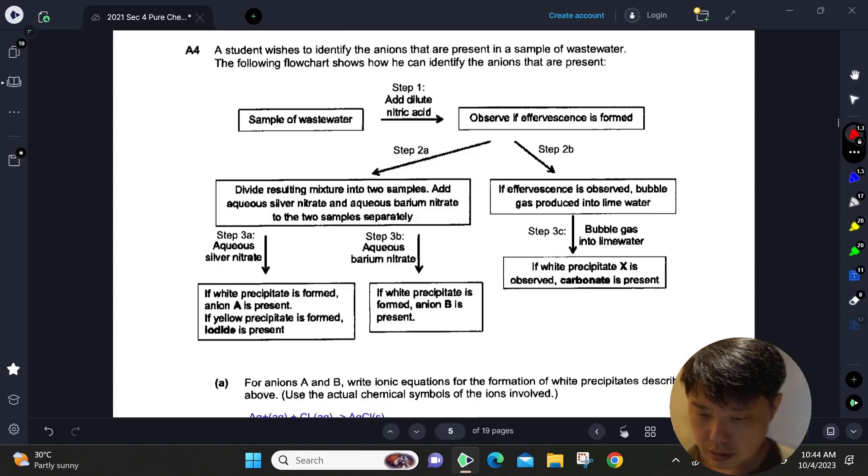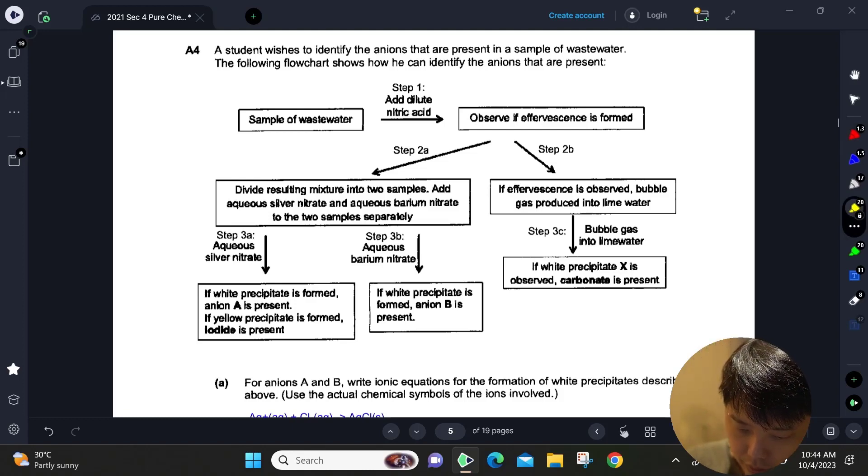Hey, fourth question. So this is like a QA reaction scheme. Just take a look at this whole scheme. Part A says for anions A and B, write ionic equations for the formation of white precipitate described. Anions A and B are actually here: anion A, anion B. So where did they come through?